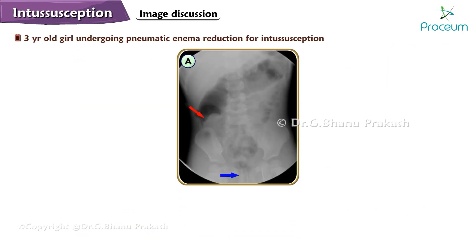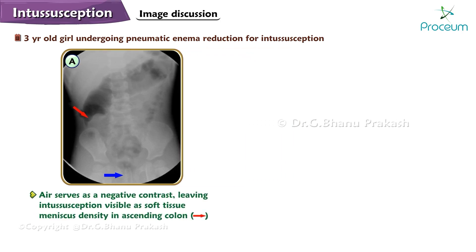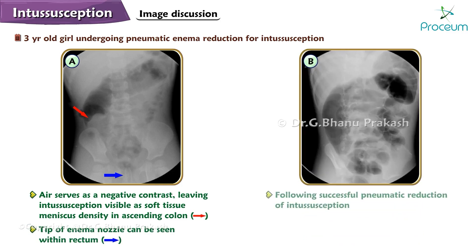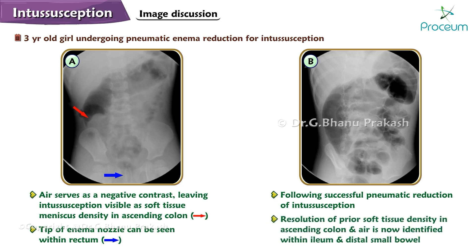Here is an image of a 3-year-old girl undergoing pneumatic enema reduction for intussusception. Image A: Air serves as a negative contrast, leaving the intussusception visible as a soft tissue meniscus density in the ascending colon; the tip of the enema nozzle can be seen within the rectum. Image B: Following successful pneumatic reduction, there is resolution of the prior soft tissue density in the ascending colon, and air is now identified within the ileum and distal small bowel.